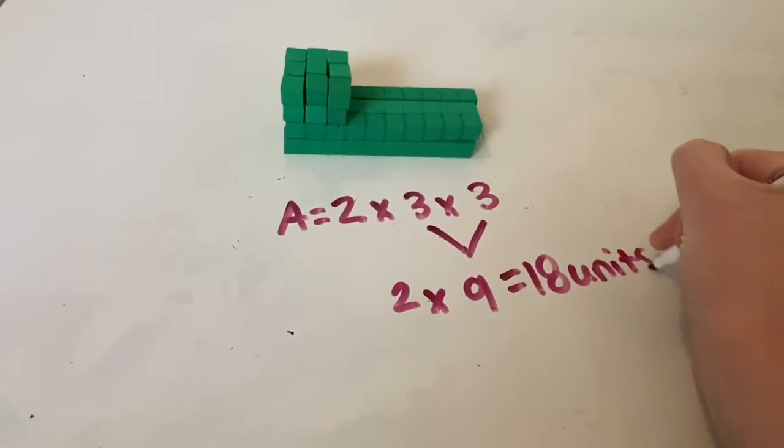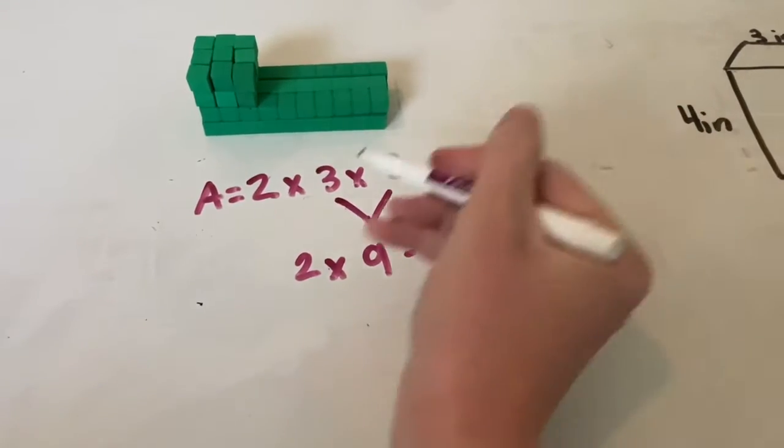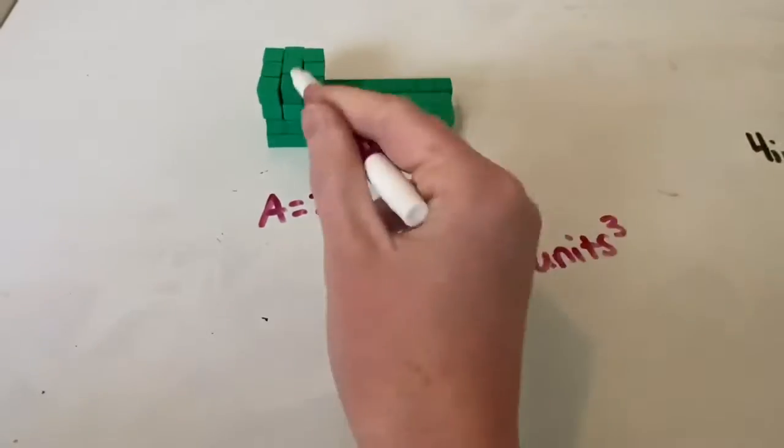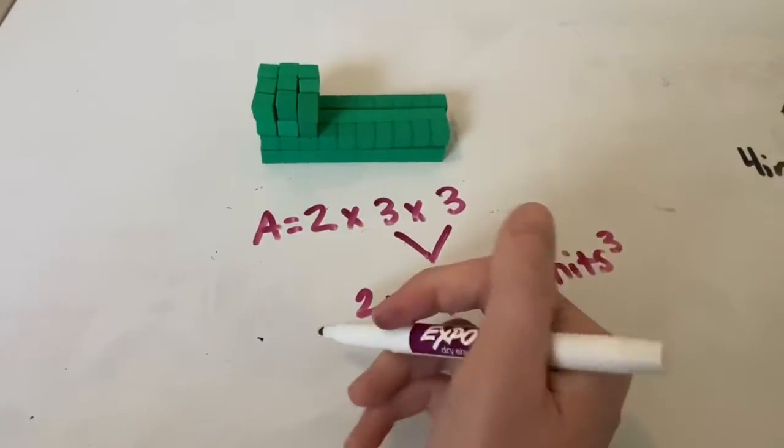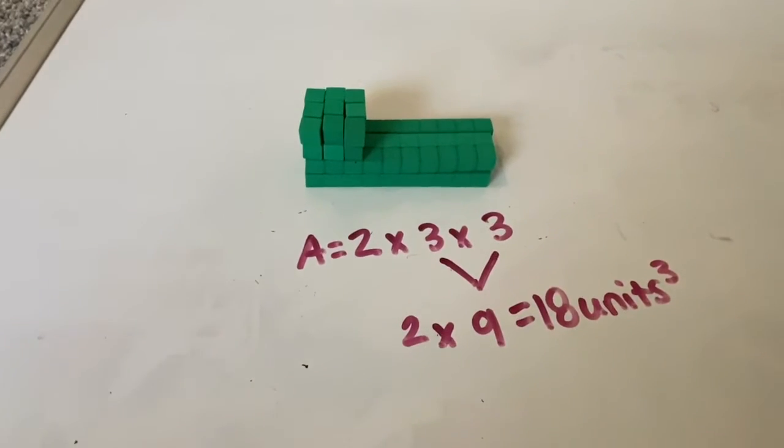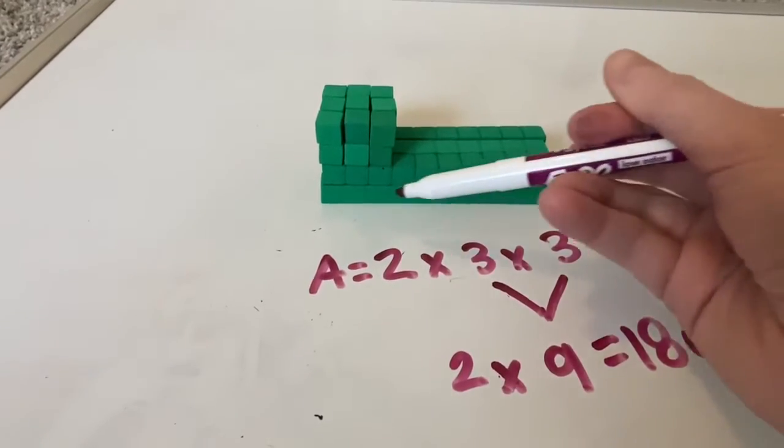And that is also units cubed. Remember that we put an exponent of three because we are multiplying three factors to get our product, and it is a 3D figure. So A, this top figure, is 18 units cubed. Now let's look at the bottom figure, figure B.